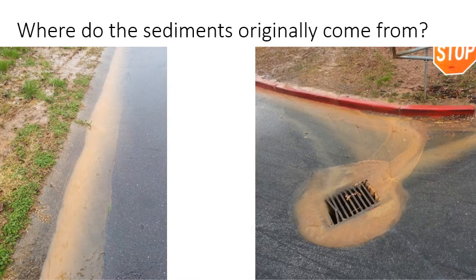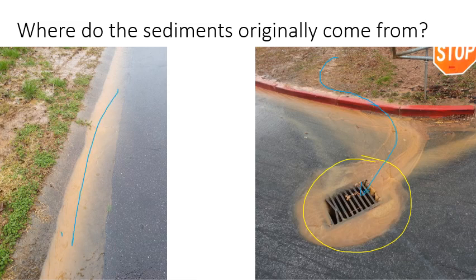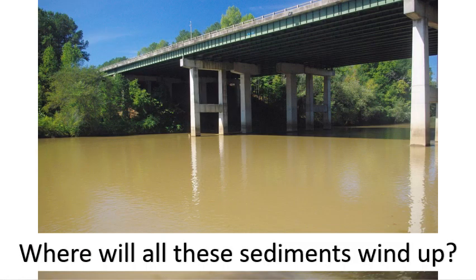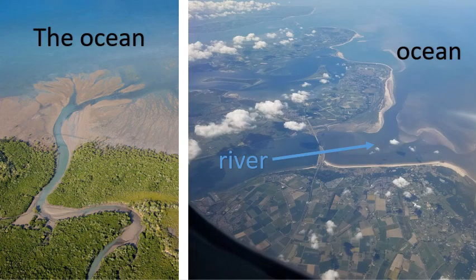The question becomes: where do those sediments come from? We see sediments coming down the drain as water runs across the ground — it picks up dirt and moves it. A lot of those sediments wind up in the river, because rivers are big collections of runoff. You can see all of that sediment in the Chattahoochee River. Most rivers wind up in the ocean, so rivers bring those sediments and drop them in.